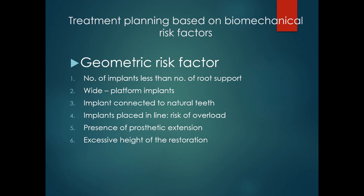The next geometric risk factor is the wide platform implant — implants wider than 5 mm do not transfer adequate forces to supporting bone, leading to disuse bone loss, the stress shielding effect. Next is implants connected to natural teeth, called tooth-implant supported prostheses, which creates technical and biological complications. Implants placed in a line represent a severe risk of overload — implants should be spread along the alveolar ridge and placed in a tripod configuration.